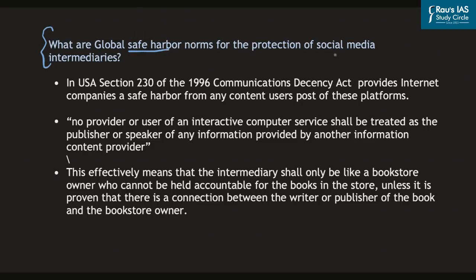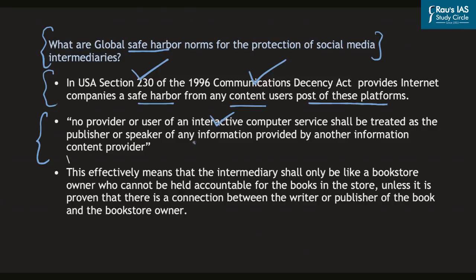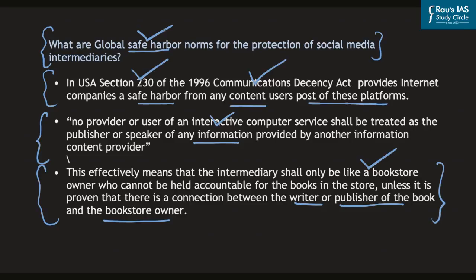In the United States of America, Section 230 of the 1996 Communications Decency Act provides internet companies a safe harbor from any content users post on their platforms. It states that no provider or user of an interactive computer service shall be treated as a publisher or speaker of any information provided by another information content provider. This effectively means the intermediary is like a bookstore owner who cannot be held accountable for books in the store unless there is a proven connection between the writer and the bookstore owner. Similarly, Section 79 of India's IT Act provides safe harbor provisions.